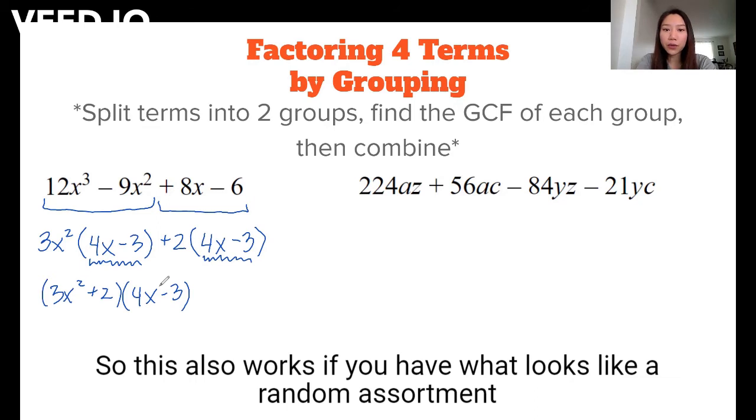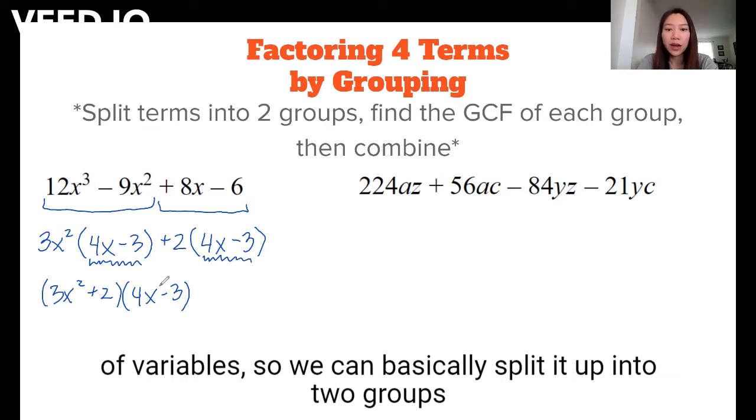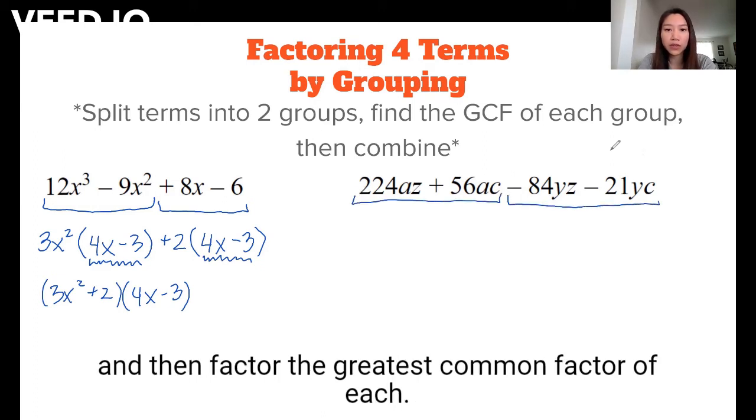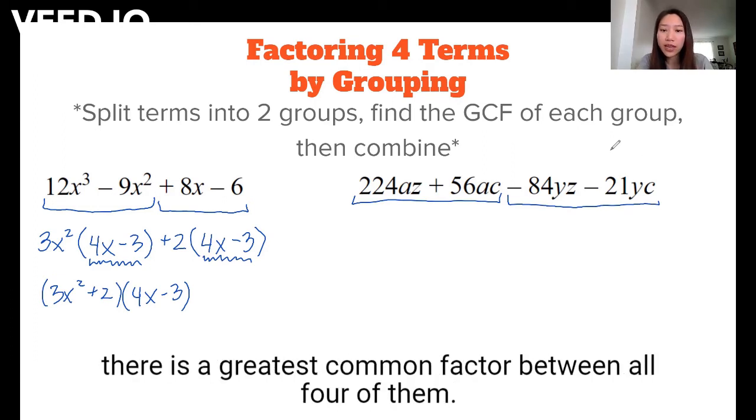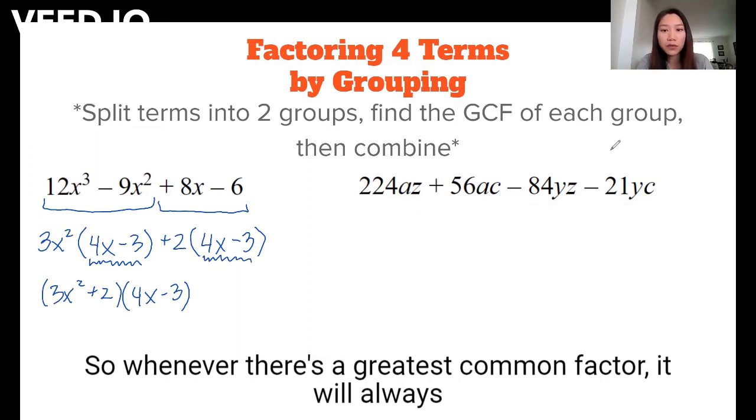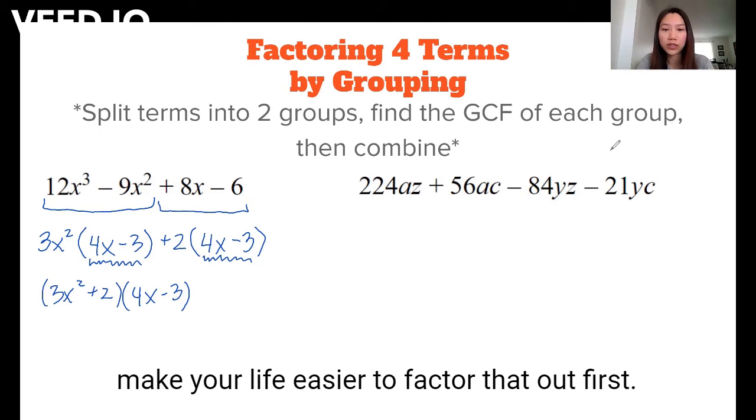So this also works if you have what looks like a random assortment of variables. We can basically split it up into two groups, and then factor the greatest common factor of each. But before we do that, I want you to notice that actually there is a greatest common factor between all four of them. So whenever there's a greatest common factor, it will always make your life easier to factor that out first.